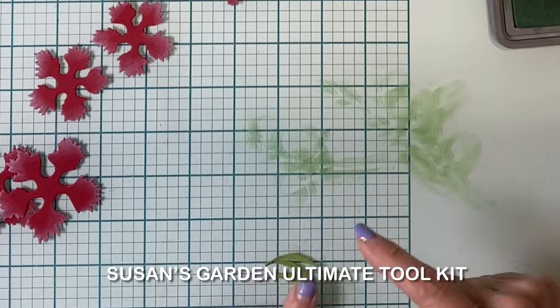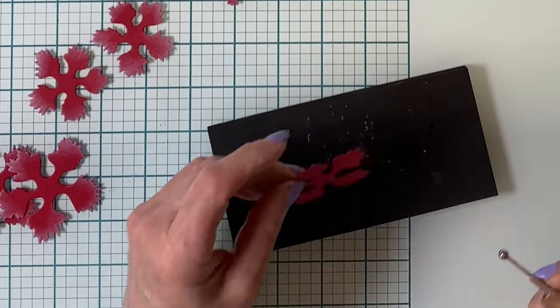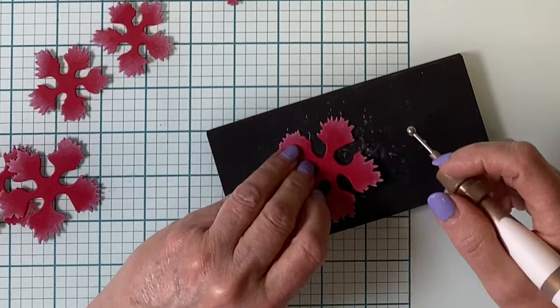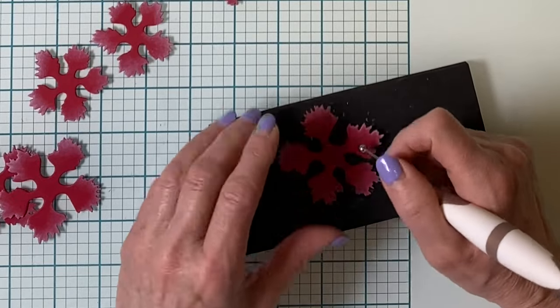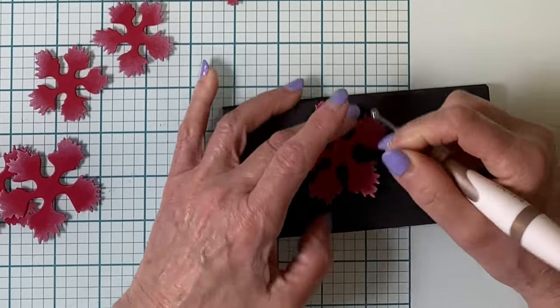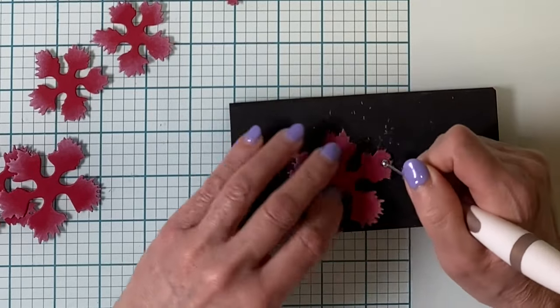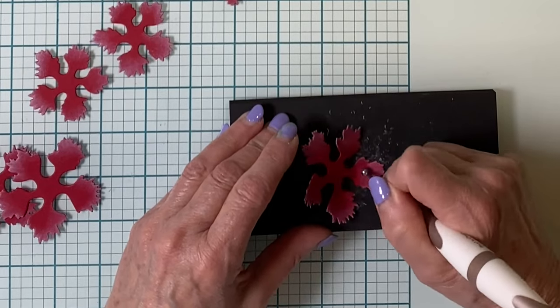I'll be doing all of the shaping using Susan's Garden Ultimate Toolkit. All of the petal layers, with the exception of one of the largest ones and the three small sizes, will be shaped the same way. This large petal layer will be the base of the flower, so this one is shaped a little bit differently.